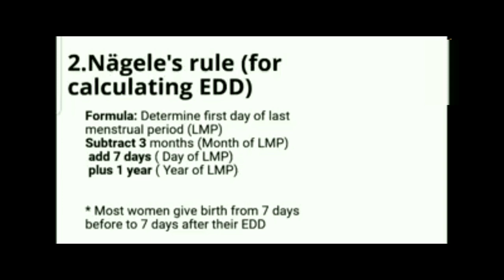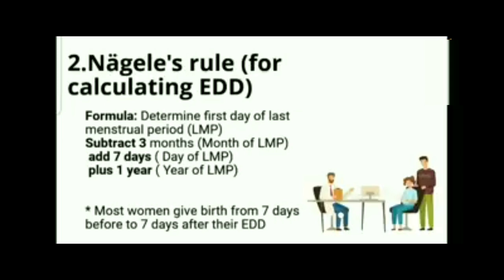According to Nagel's Rule, the woman needs to know the first day of her last menstrual period (LMP). The first day of LMP is very important to determine her estimated date of delivery (EDD). Once you know the first day of LMP — for example, if she menstruated August 19 to August 23 — disregard August 23; you only need the first day, which is August 19. The rule is: subtract 3 months from the month of LMP, add 7 days to the day of LMP, and add 1 year to the year of LMP.